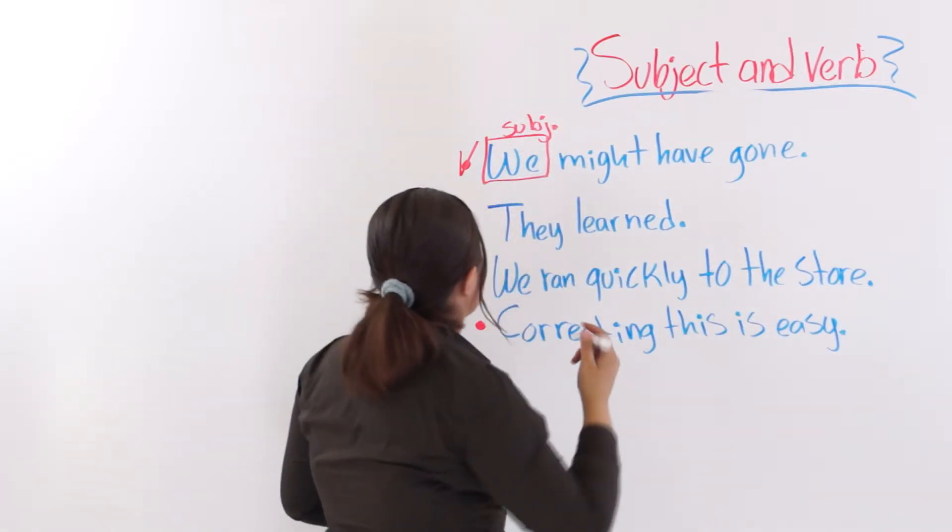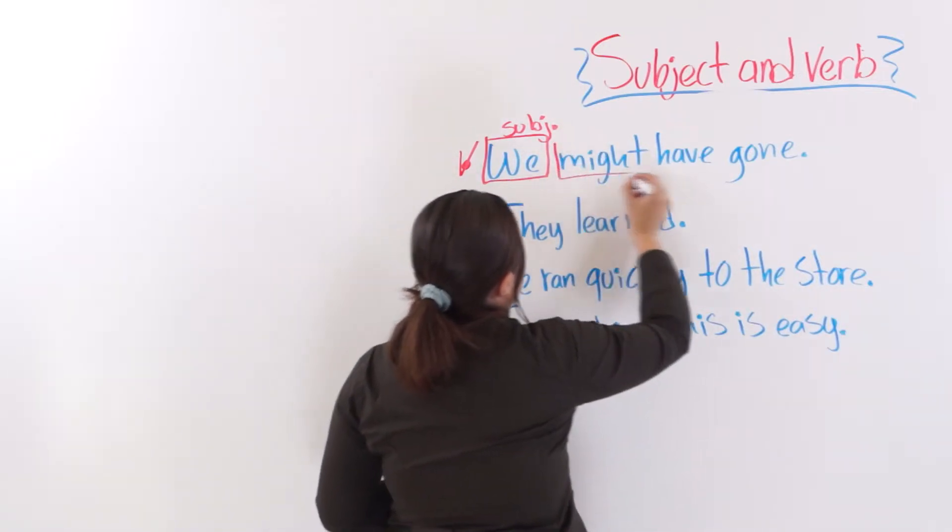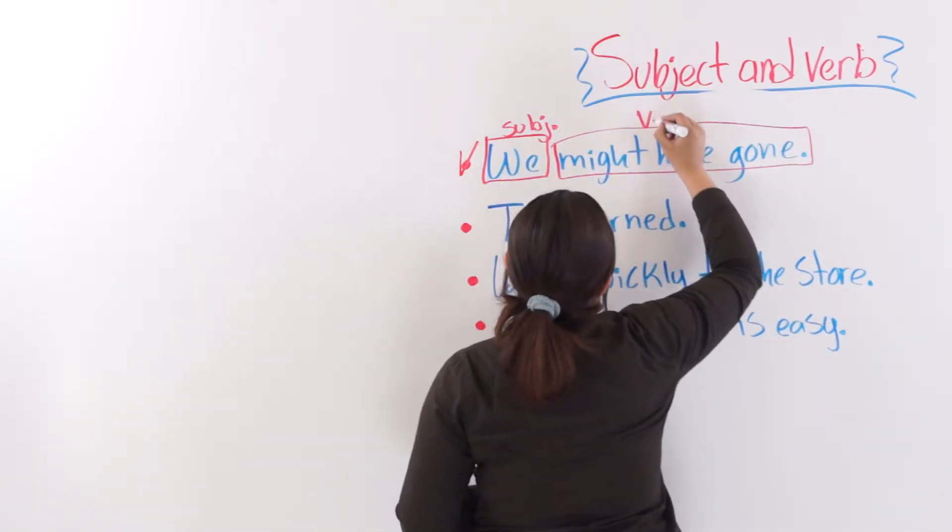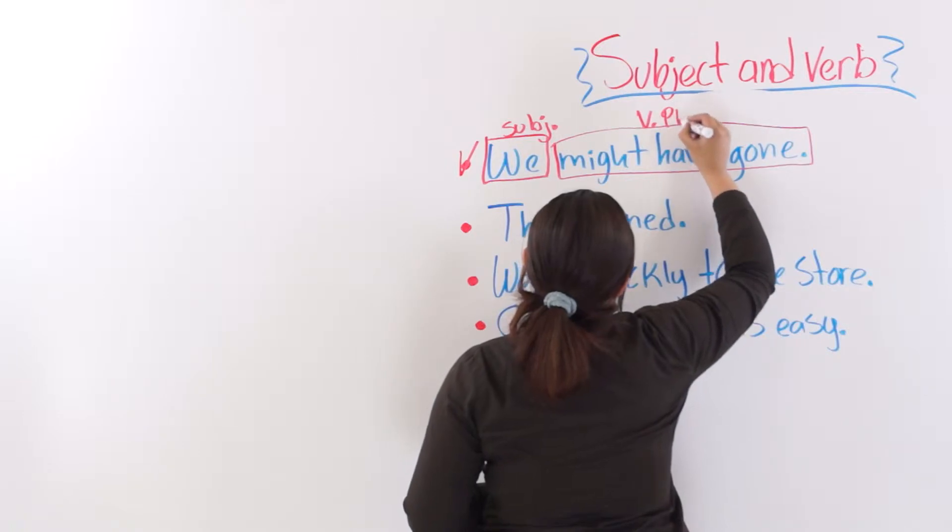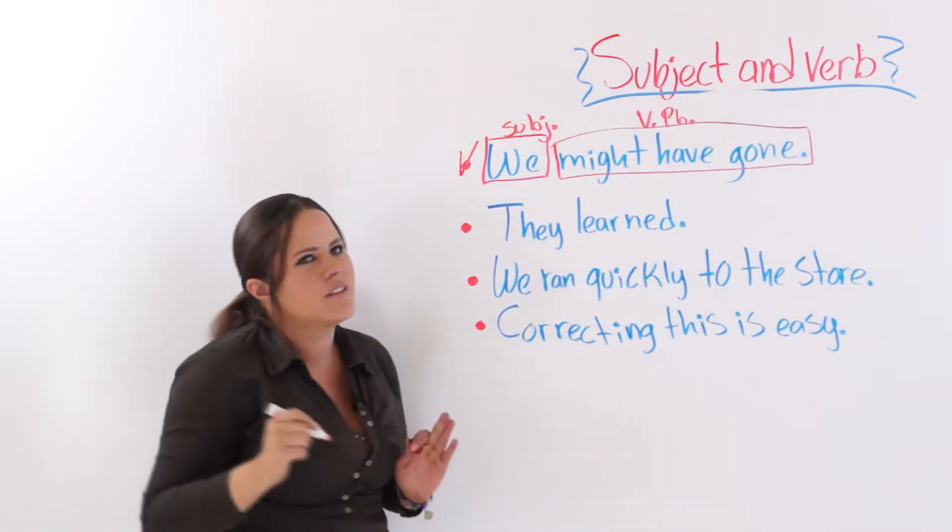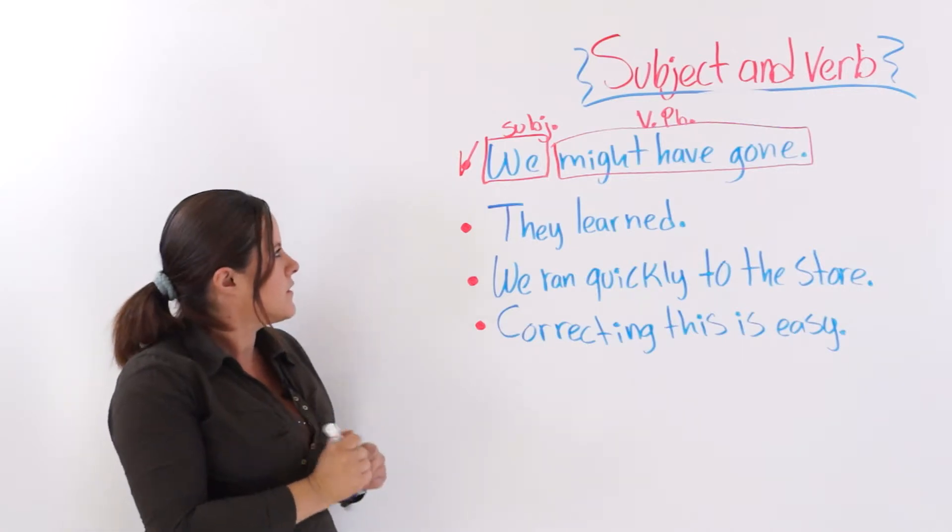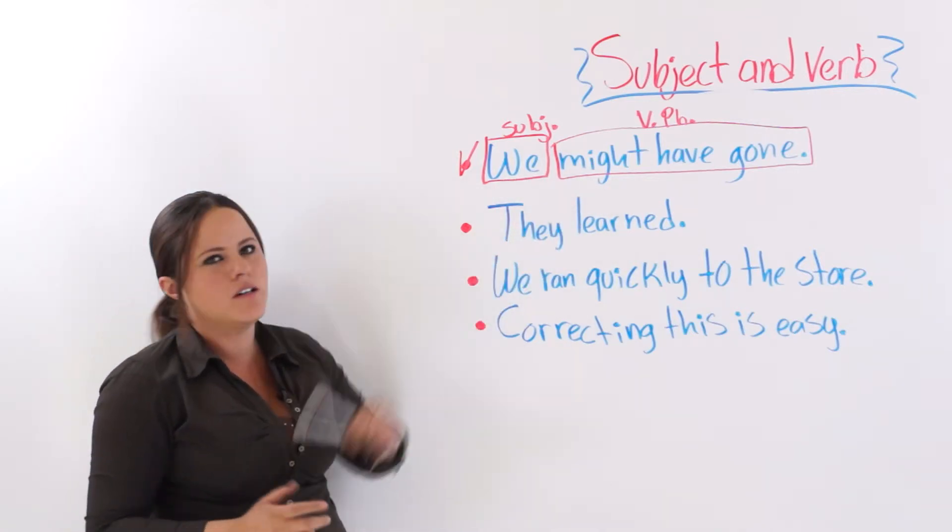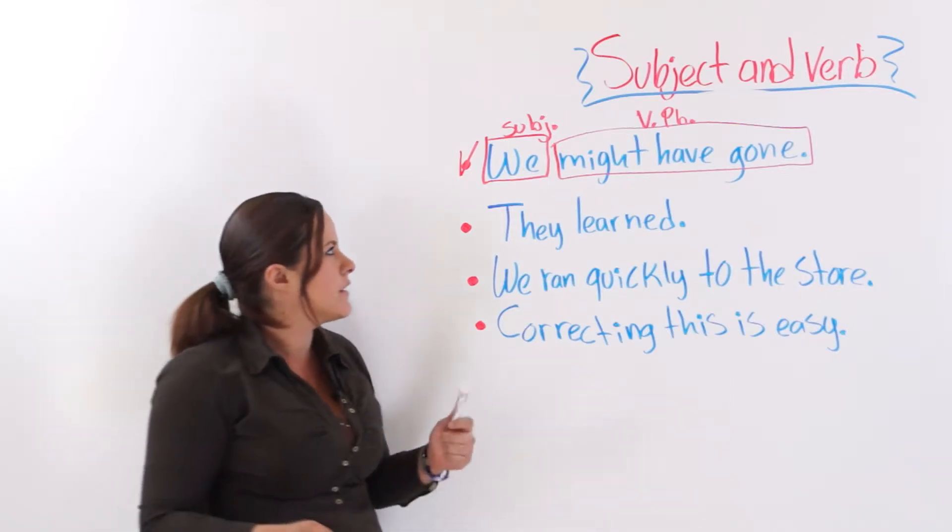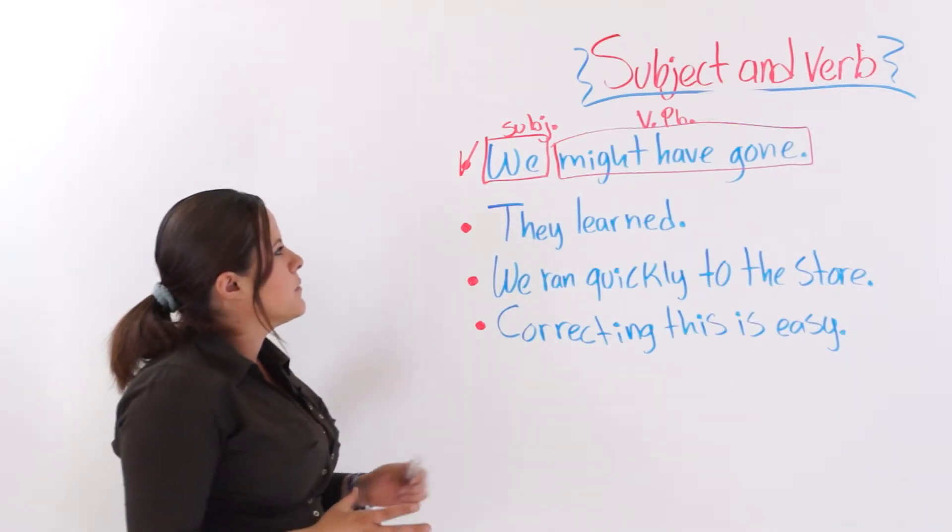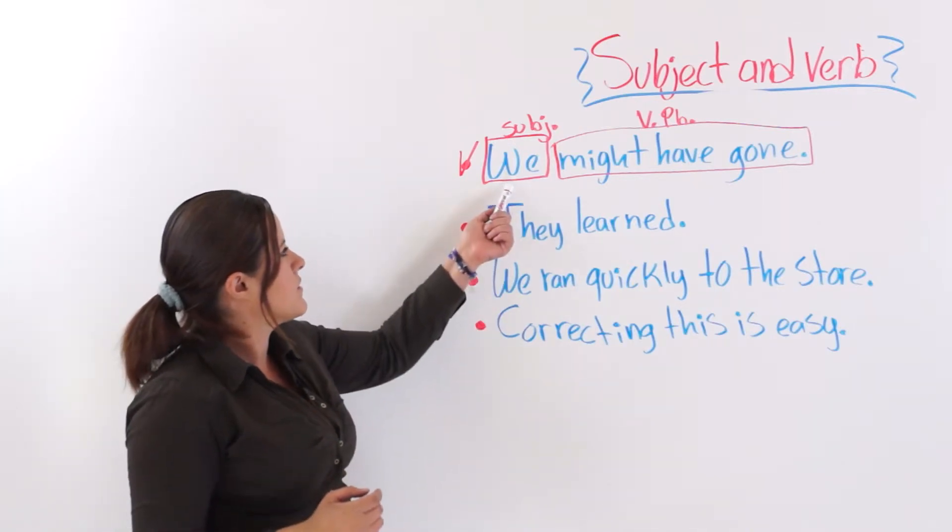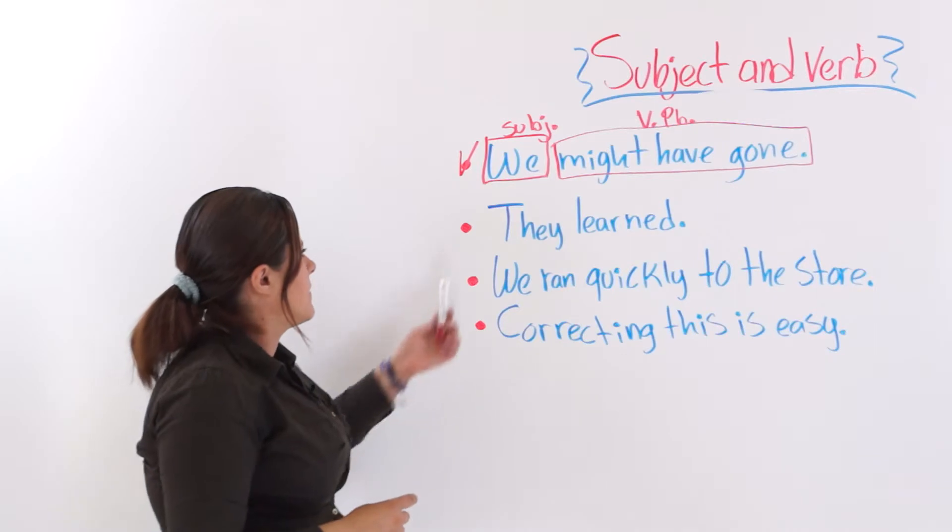We might have gone. And the verb phrase might have gone. Verb phrase. Alright? This can also be called a main clause, a principal clause, or as many people call it, an independent clause. We might have gone. Because let alone, it makes sense. And it can be a sentence, or it is a sentence.